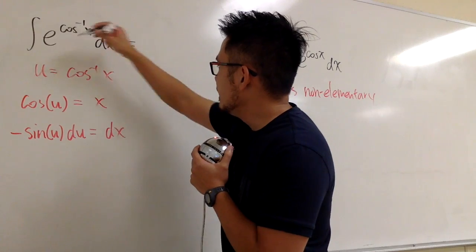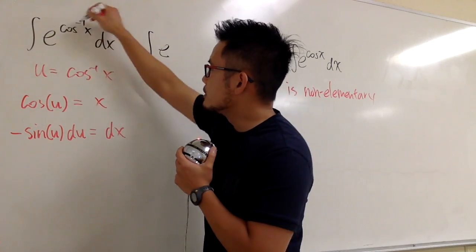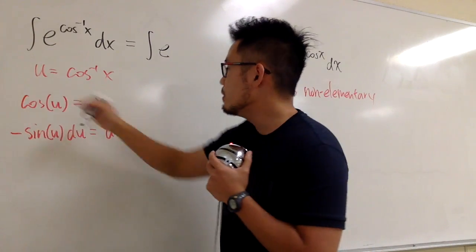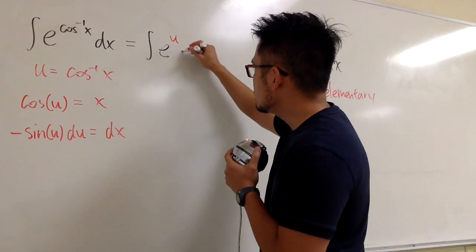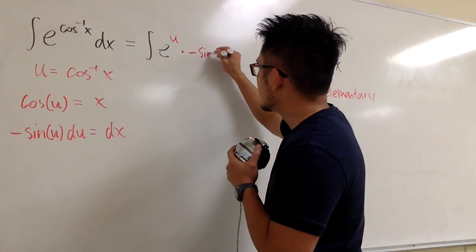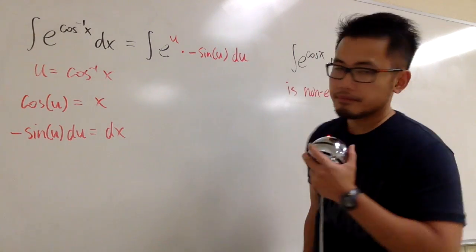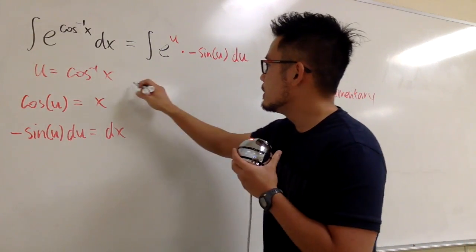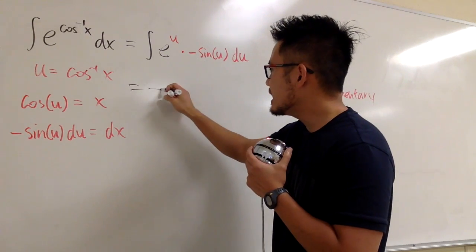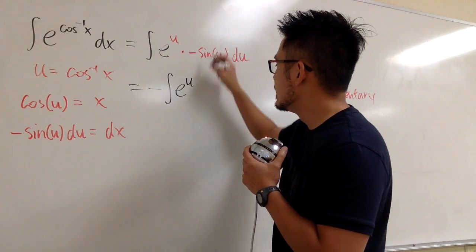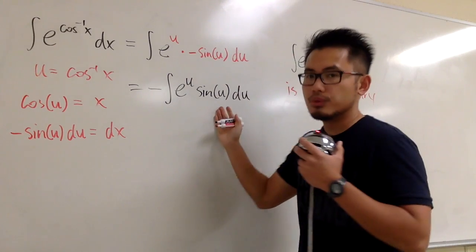So we're ready to go. This is going to be the integral. E is just the e, and the inverse cosine x is the u. So we'll put on u right here. For dx, we multiply by negative sine u du. As you can see, we have this negative right here, so we can take it outside. So we have the negative integral e to the u sine u du.